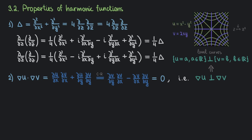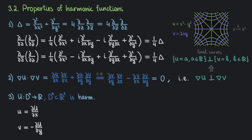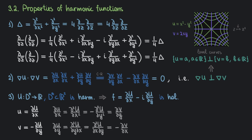We've talked about how holomorphicity implies harmonicity for the real and imaginary parts. But what about the reverse? How do we construct a holomorphic function from a harmonic one? It turns out there is a natural way. Let U be harmonic. Then if we define u = ∂U/∂x and v = −∂U/∂y, we can easily show that the function f = u + iv is holomorphic.